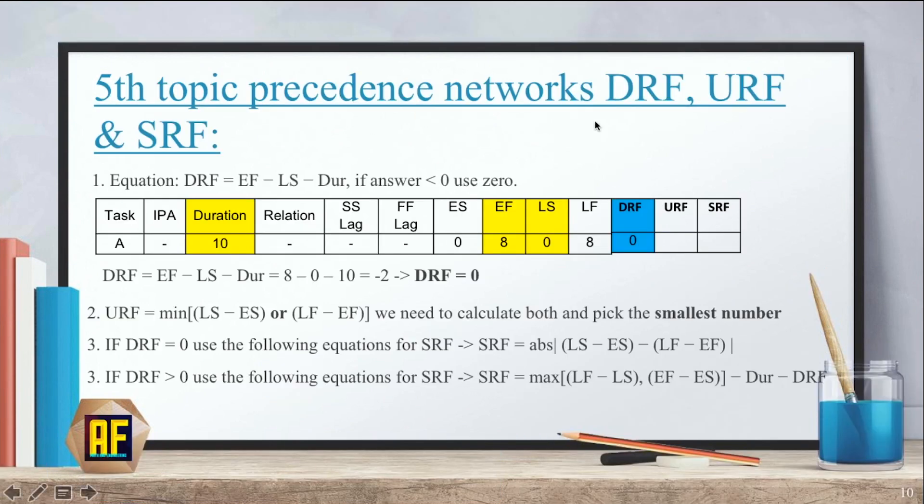Our fifth topic was the same precedence networks, only we add the DRF, URF, and SRF to the equation. And if you remember, the equation for DRF is EF minus LS minus duration. If our answer is negative, we use zero. And for our URF, we pick the minimum number of LS minus ES or LF minus EF, the smaller of these two. And if our DRF equals zero, we use this equation for SRF.